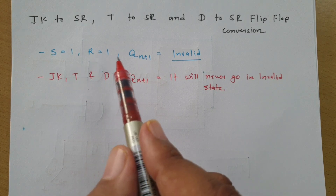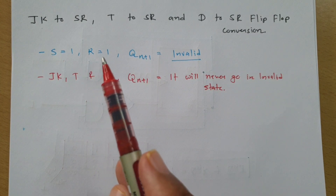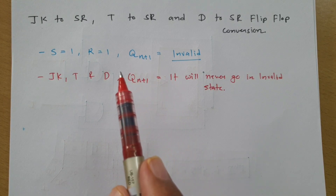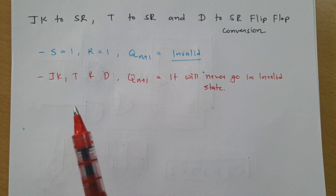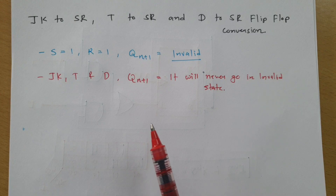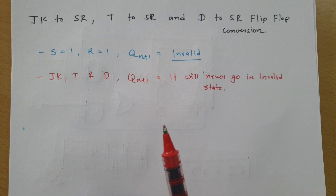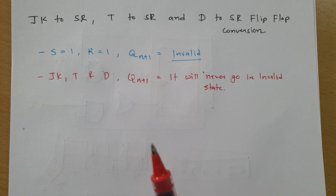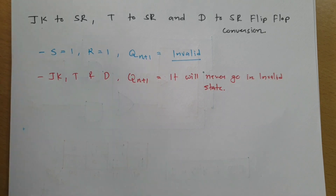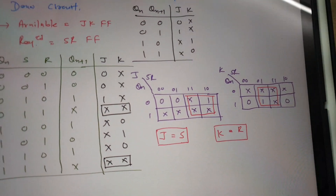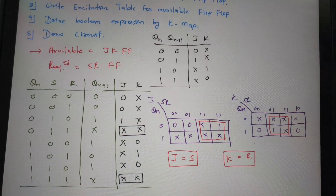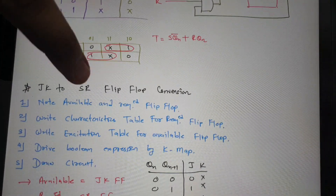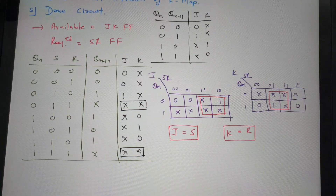If you follow the 5 steps blindly, you may attempt to solve the problem, but whatever calculation you do will always be wrong. I have seen many people try this calculation, and it has even been shown in some books — showing a JK to SR flip-flop conversion.